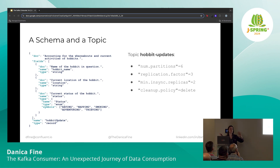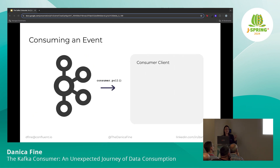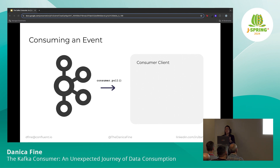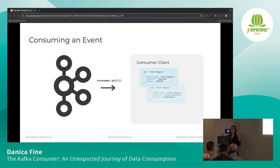We can imagine we've had some producer clients writing to that topic. We have a lot of data that we want to consume from. We have this topic we want to read from, we have the schema so we can deserialize that data. We can set up a consumer in whatever language we want — probably Java — and in that code we will issue a consumer.poll. And then the data magically shows up on the consumer client for us. We're done. You can all leave.